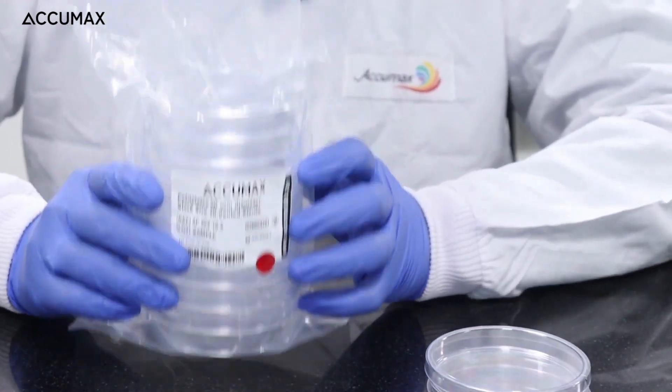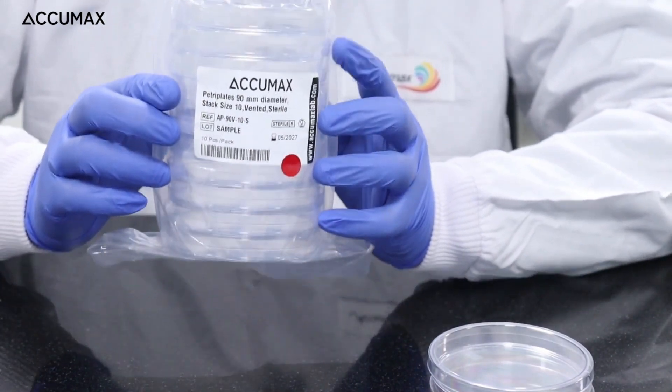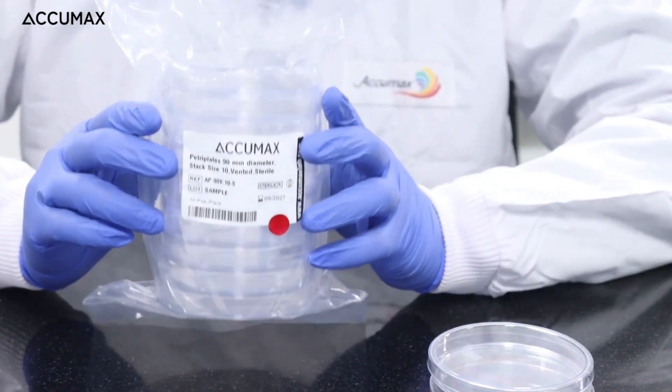There are two packing options available. Accumax petri plates are available in the sleeve of 10 plates while it is also available in the sleeve of 20 plates.